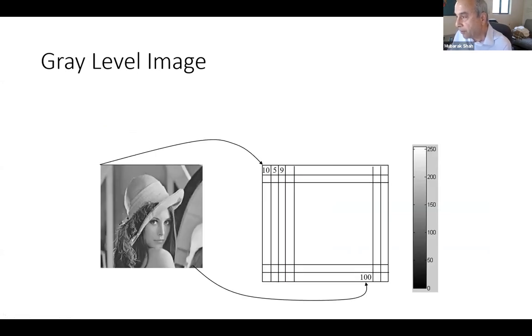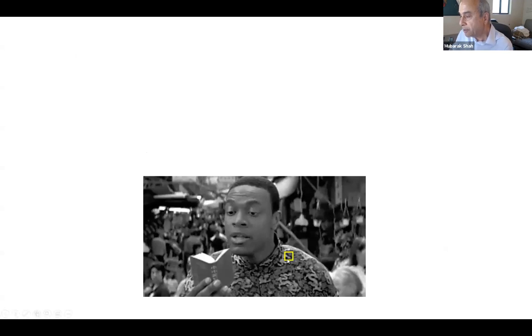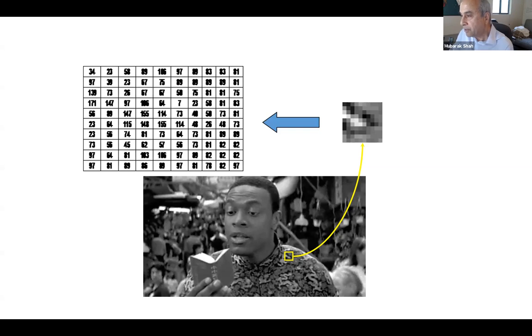A more realistic gray level image is also a matrix — an array in computer programming. Zero is black and 255 is white, and numbers between them are gray. Color images have three channels: blue, green, and red. If you look at a small patch of an image and blow it up, you see actual numbers. What the computer has to see are these numbers, and from them it has to determine that this is a piece of a sweater a person is wearing — a very complex and challenging task.